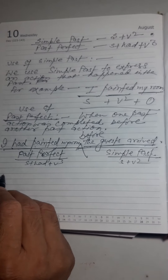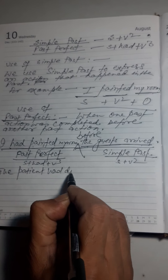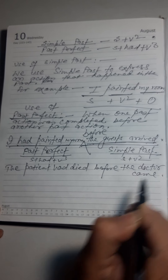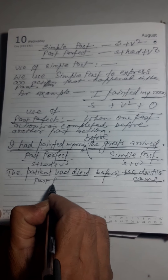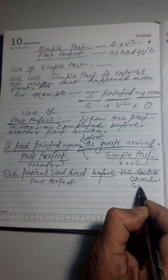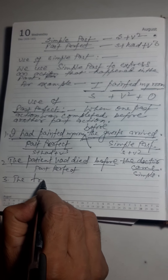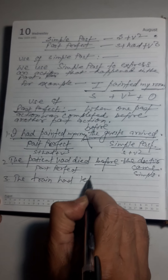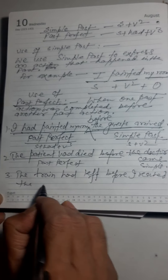Some more examples. 'The patient had died before the doctor came.' Same thing here — 'the patient had died' is past perfect, and 'the doctor came' is simple past. Third example: 'The train had left before I reached the station.' Again, 'the train had left' is past perfect, and 'I reached the station' is simple past.